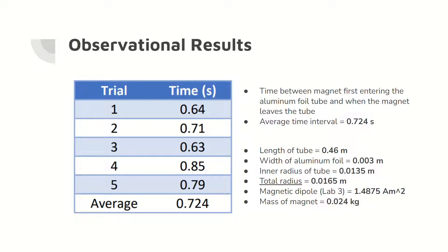Here are the observational results. The average time for the magnet to drop through the tube is 0.724 seconds. To the right, there are some measurements for the tube and for the magnet, including the tube length and radius and the magnet mass and dipole moment. Note that the dipole moment is from lab 3.